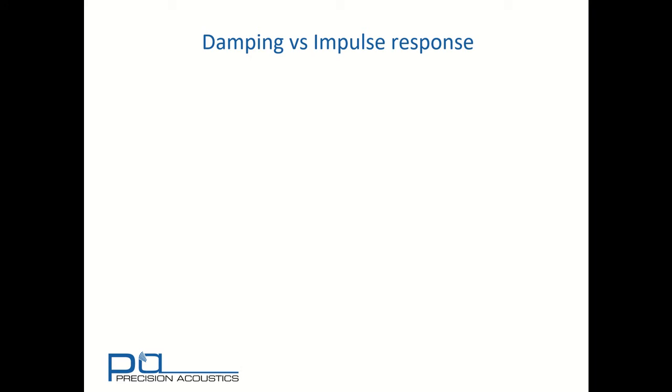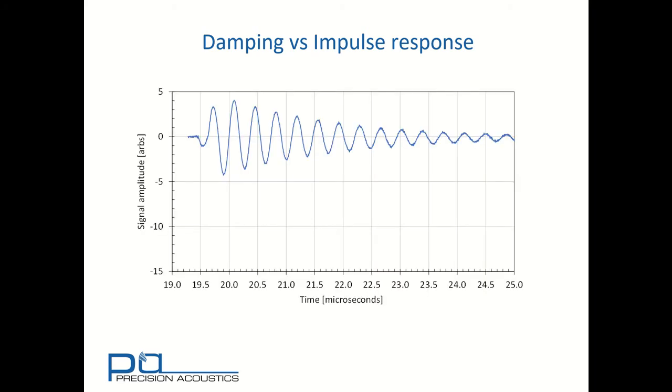Let's have a look and see how that translates to the time signature output by the transducers in response to an electrical impulse. This is the narrowband, low damping transducer. We can see that it's got quite high amplitude but a very long burst, with the ring down being some 12 to 15 cycles.